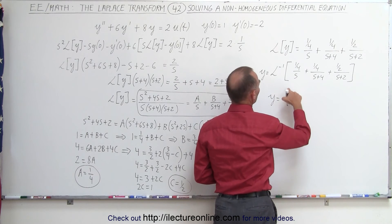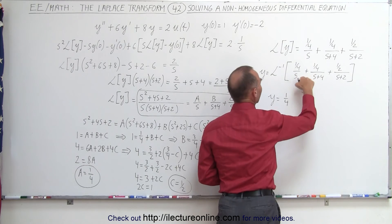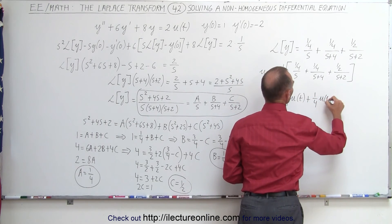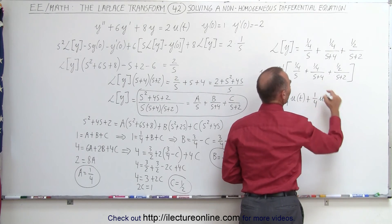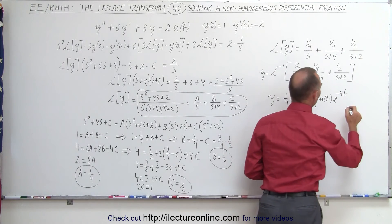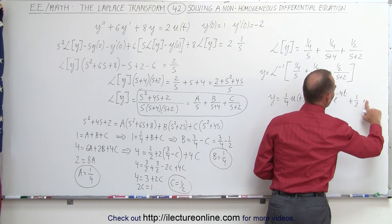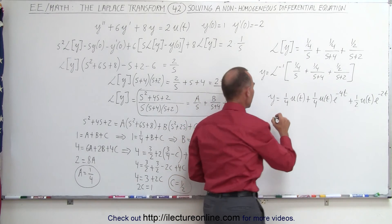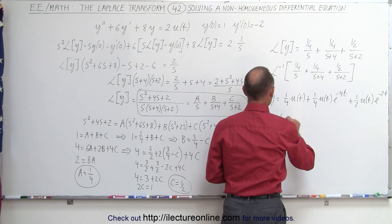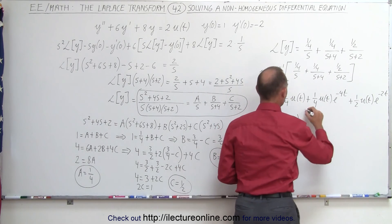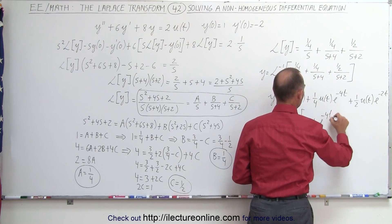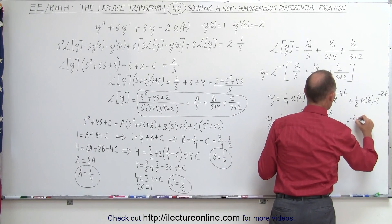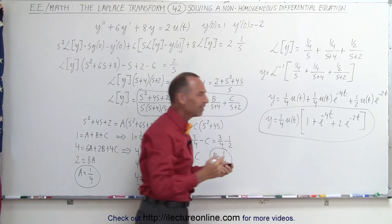Therefore y equals the inverse Laplace transform of one quarter over s, plus one quarter over s plus four, plus one half over s plus two. The inverse of one over s is the unit step function u(t). The shift of four gives e to the minus four t, and the shift of two gives e to the minus two t. Factoring out one quarter times u(t), we get y equals one quarter times u(t) times the quantity one plus e to the minus four t plus two e to the minus two t, which is the most compact form of the solution.